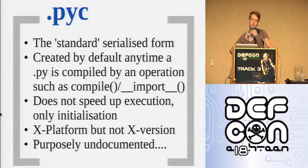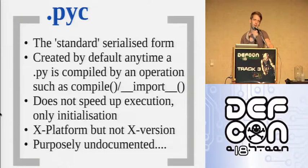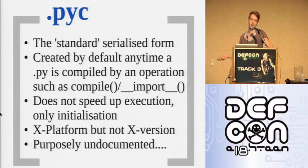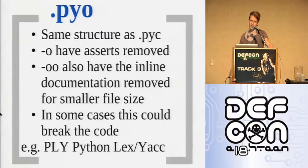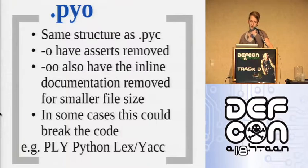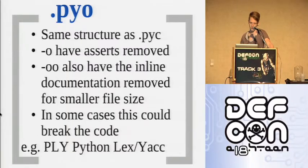A .pyc is cross-platform — it will run on Linux and Windows — but it's not cross-Python-version, so a 2.4 .pyc won't run on a 2.5 runtime. It's purposely undocumented by the Python developers to give them flexibility to change the bytecode format. .pyo files have the same structure as .pyc but are optimized: first level removes asserts, second level removes asserts and inline documentation. This has nothing to do with speed, purely file size. Most things are fine, but Python lex-and-yacc fails if you remove doc strings since the grammars are kept in them.